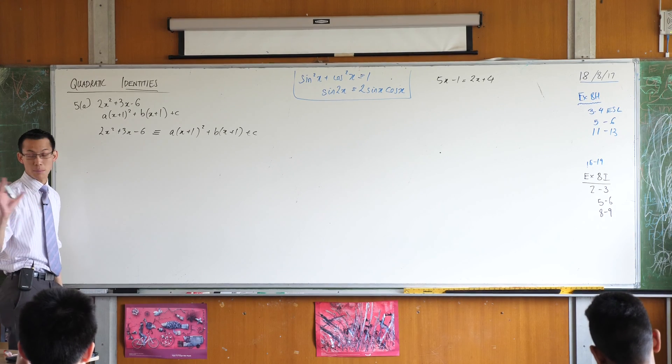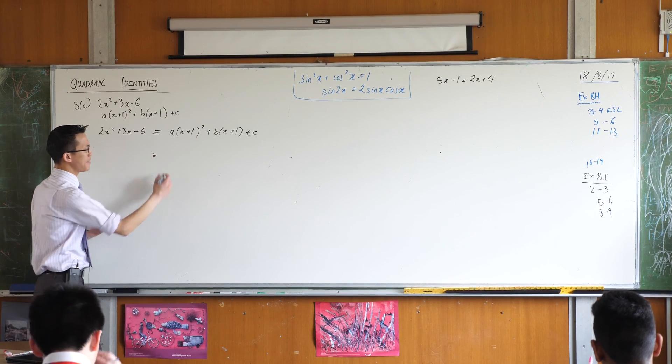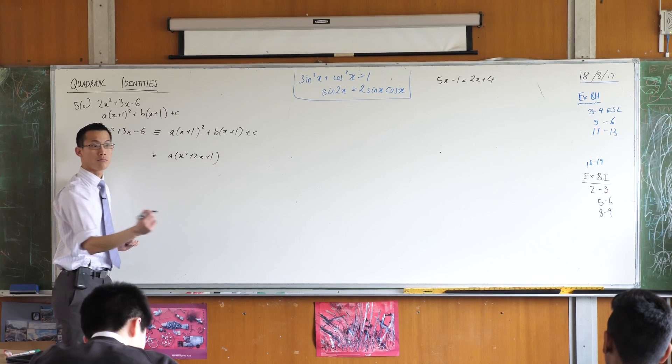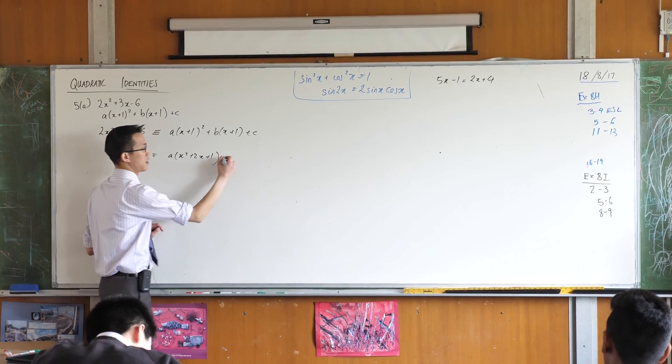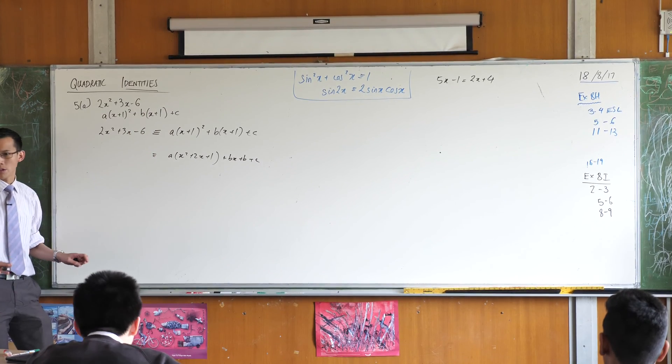Let's take Paul's suggestion to begin with and expand this guy. So on the right-hand side, this is going to be x squared plus 2x plus 1, yep, plus bx plus b plus c. How's that look? Is that okay?